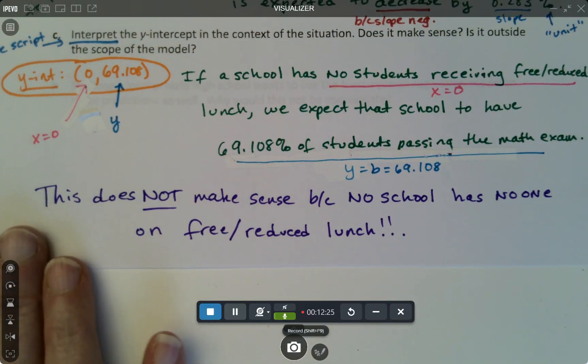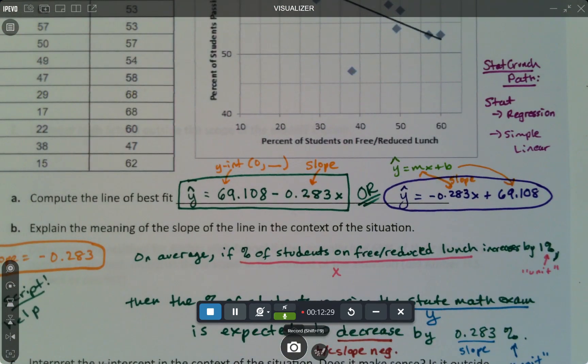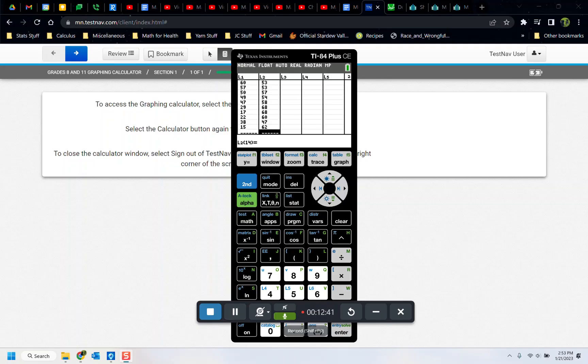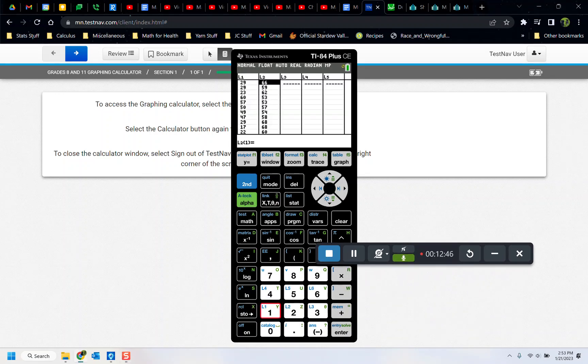Now one last thing before we leave this page, I want to show how to find that linear regression model with the TI calculator. But if you're not using the TI calculator, just skip ahead to the next video. All right, TI calculator folks. So let's go find the TI calculator. One second. Okay, so I went to stat, edit, and I entered the data, no problem.